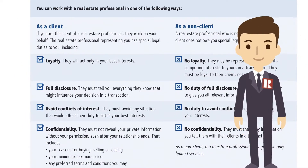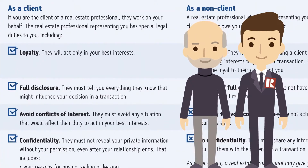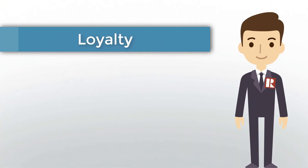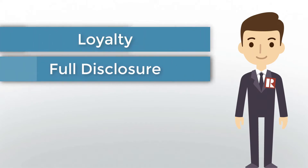Real estate professionals can represent a consumer in one of two ways. As a client, the real estate professional will be working on your behalf as your agent. Your realtor will owe you special legal duties, including loyalty — your agent will act only in your best interest — and full disclosure, meaning your agent must tell you everything they know that might influence your decision in a transaction.